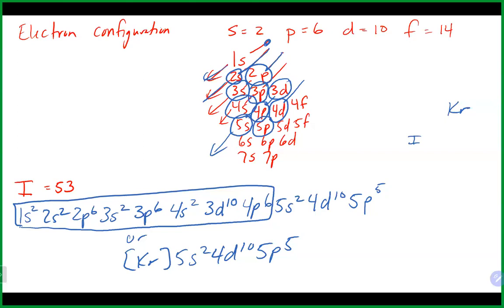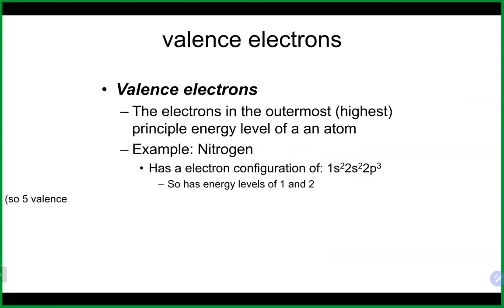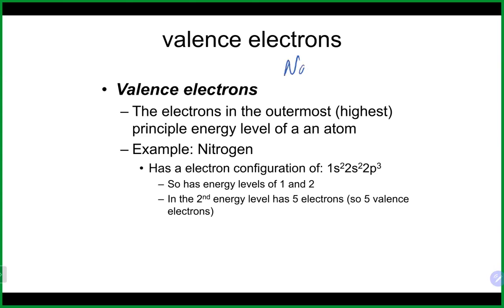So that's electron configuration. The last thing we're going to talk about in this chapter is the periodic table and some periodic trends. The first thing is valence electrons — valence electrons are the outermost electrons in an atom. If we look at something like sodium, its electron configuration is 1s2, 2s2...